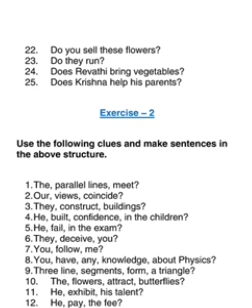Second: Do our views coincide? Why are you using 'do' there? Because it's 'our views', not 'our view'. Third: They — so with 'they' you use 'do' for positive questions. Do they construct buildings? Fourth: He build confidence in the children. Does he build? Because 'he' is there, so you bring 'does' before 'he'. Does he build confidence in the children? Fifth: Does he fail in the exam? Sixth: Do they deceive you?